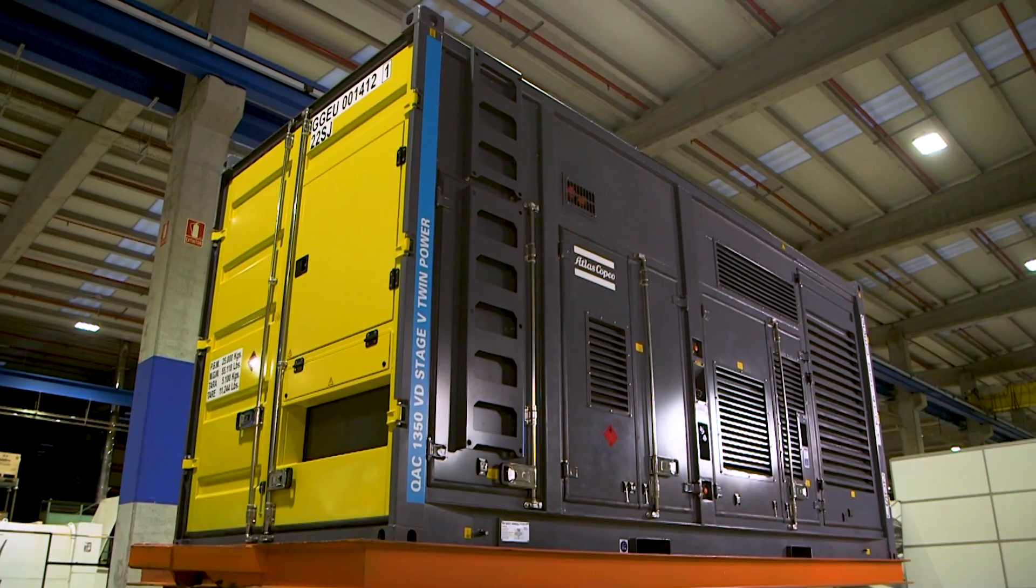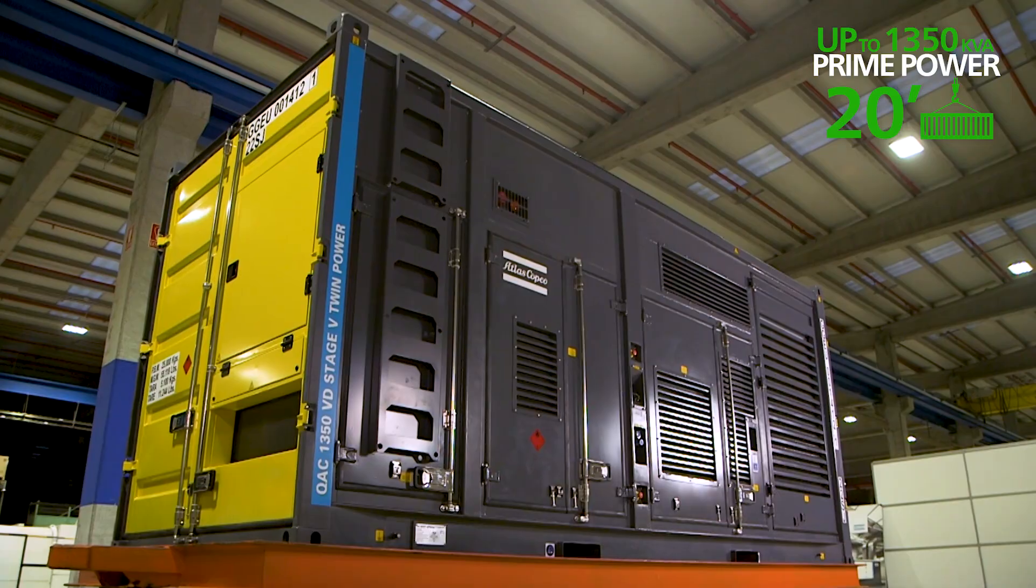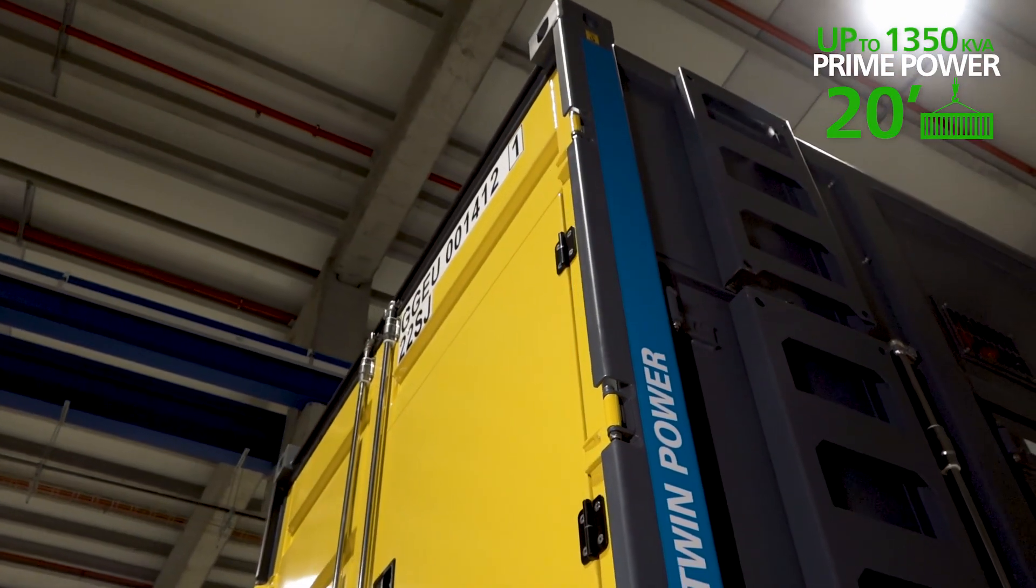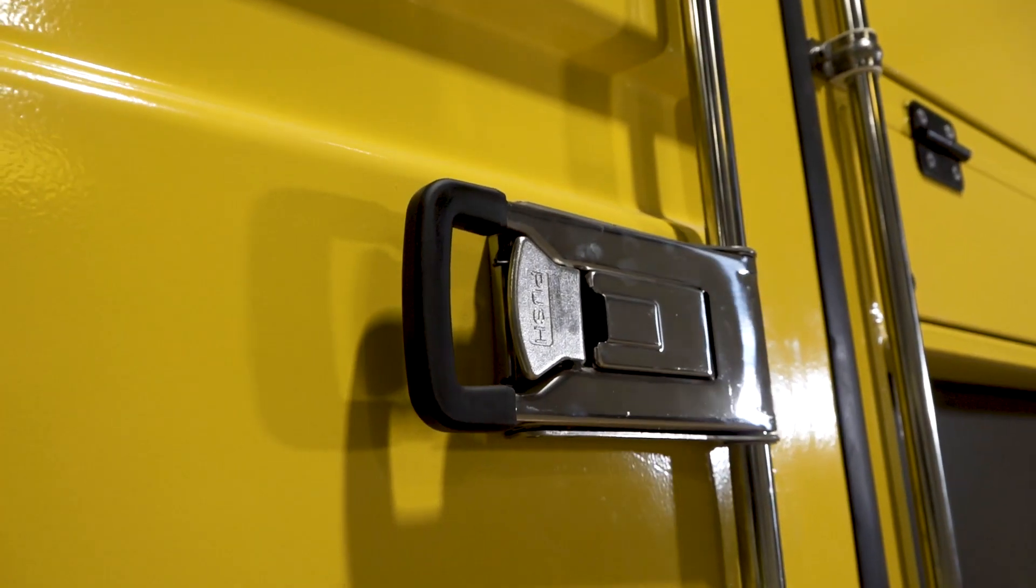The unique TwinPower Stage 5 new large generator is a masterpiece of engineering, where Atlas Copco's innovation team has managed to fit 1,350 kVA of stage 5 power within a 20 feet container, achieving the highest stage 5 power density on a compact green package.